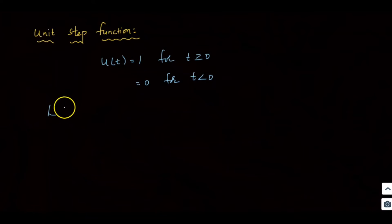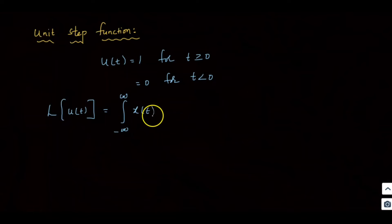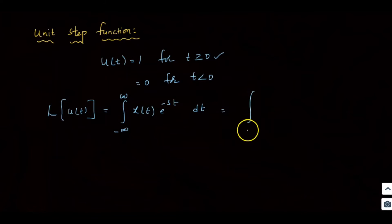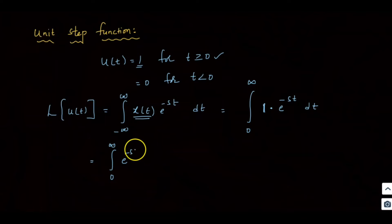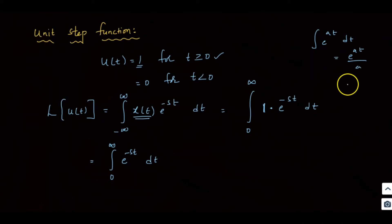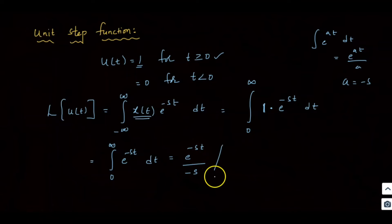Now we will find the Laplace transform of u(t). The Laplace transform is the integral from minus infinity to infinity of x(t) times e^(−st) dt. Since u(t) is defined only for positive values, the limits become 0 to infinity. With u(t) = 1, this becomes the integral from 0 to infinity of 1 times e^(−st) dt.